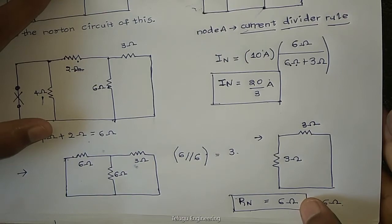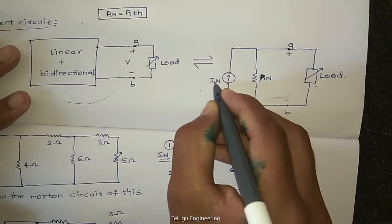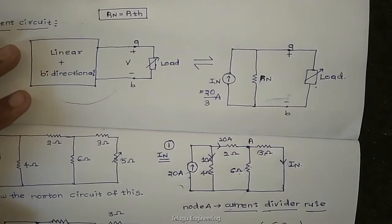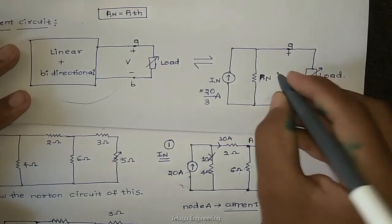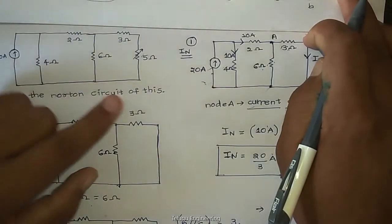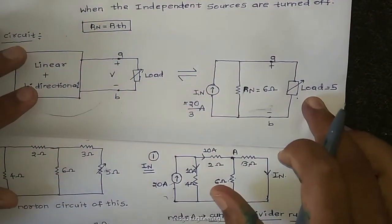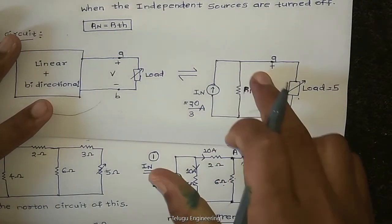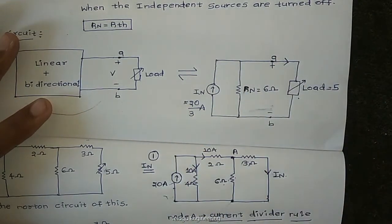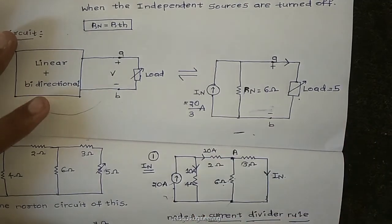So we have Norton resistance Rn = 6 ohms and Norton current IN = 20/3 amperes. Replace with the Norton equivalent: IN = 20/3 A in parallel with Rn = 6 ohms, and connect the load of 5 ohms. If the load changes, simply apply the current divider rule. That's it — very simple, thank you.